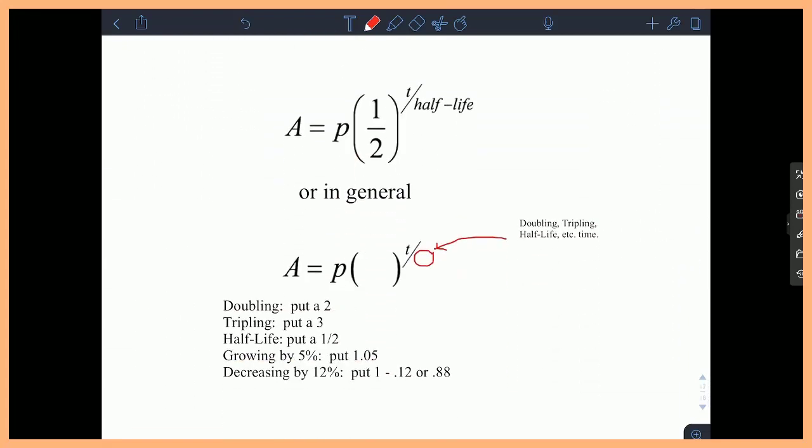The last one we're going to look at is just your general half-life, doubling, tripling formula. At the top it just says A, which is the amount of the substance left, is equal to P, which is your initial. If this is a half-life problem, one half goes into parentheses. And then the exponent is T divided by the time it takes to cut in half.